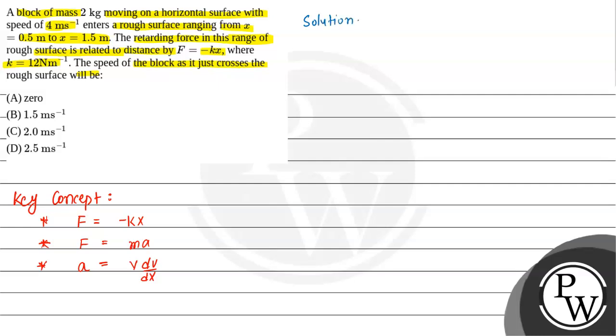So first let's write what is given. Mass is 2 kg, spring constant given is 12 newton per meter, and the rough surface range is from x1 equal to 0.5 meter to x2 equal to 1.5 meter.